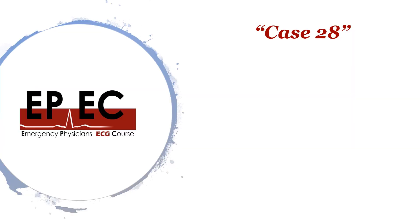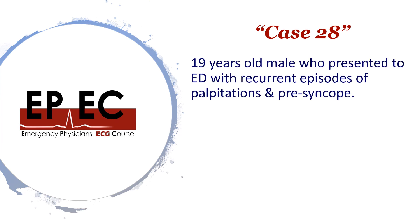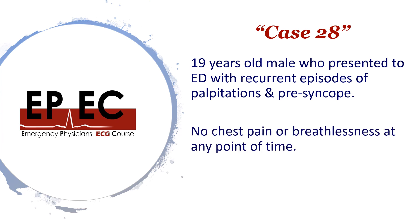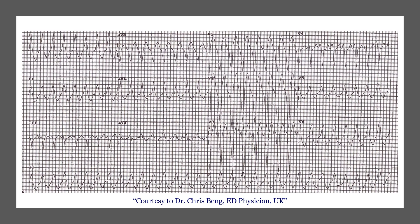Let's start with case number 28 because it has the more interesting and educational ECG findings. This was a 19-year-old male patient who presented to ED with recurrent episodes of palpitations and presyncopal events. There was no chest pain or breathlessness at any point. He had a 12-lead ECG on arrival showing broad complex regular tachycardia — the patient was in VT.